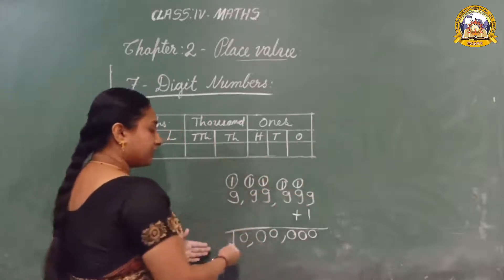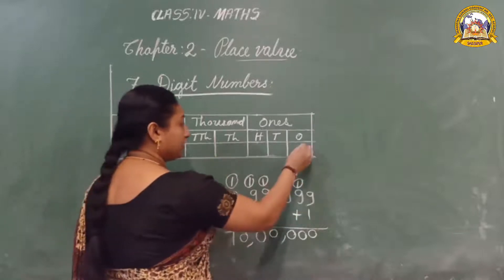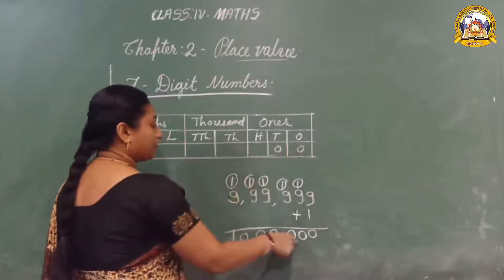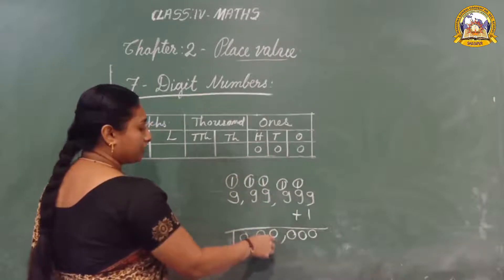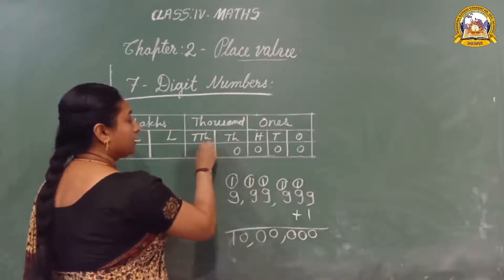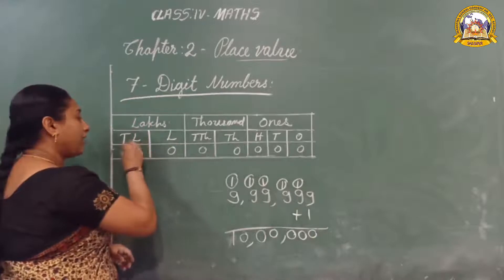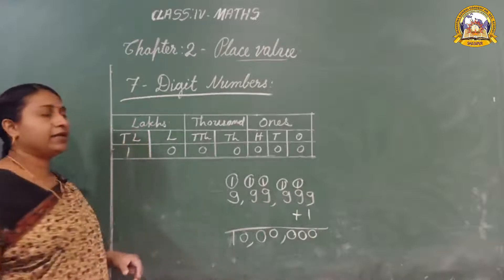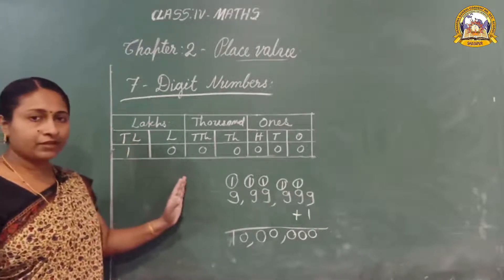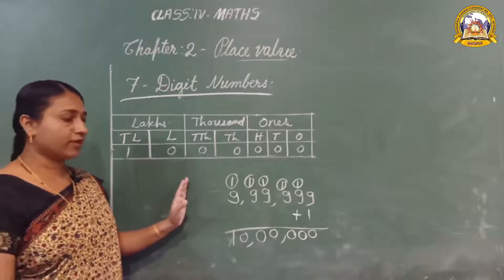Let us arrange this digit in the place value chart: zero ones, zero tens, zero hundreds, then zero thousands, zero ten-thousands, zero lakhs, and one ten-lakh. Okay, did you get that? I shall give more examples on that.